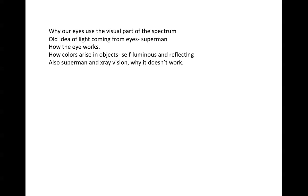The colors of objects come about in different ways, depending upon whether the objects are self-luminous — that is, generating the light themselves — or reflecting. In a self-luminous object, the color reflects the balance of photons at the red end of the spectrum or the blue end of the spectrum, the red being the long wavelength end and the blue being the short wavelength end, that are emitted by the object. So when you see a red light, for example, it is sending out more red photons than blue photons, and it looks red.